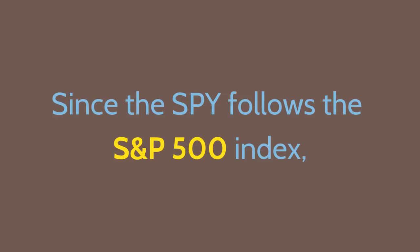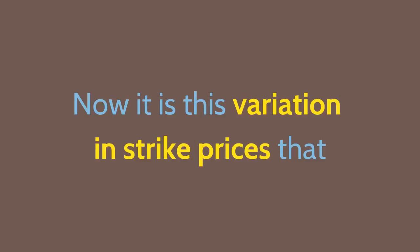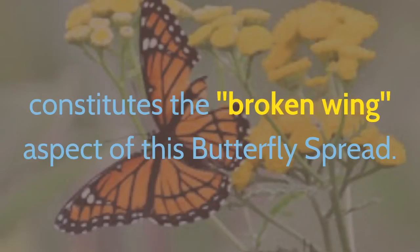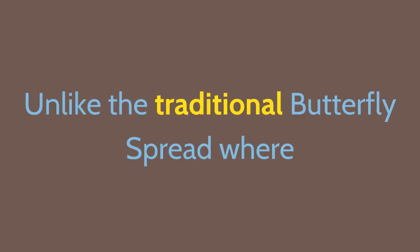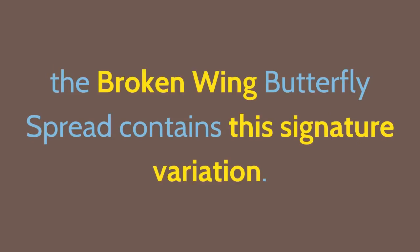Since the SPY follows the S&P 500 index, this represents 500 points on the S&P 500. It is this variation in strike prices that constitutes the broken wing aspect of this butterfly spread. Unlike the traditional butterfly spread where the difference between all strike prices is equal, the broken wing butterfly spread contains this signature variation.